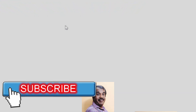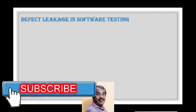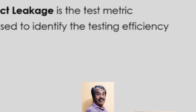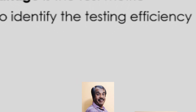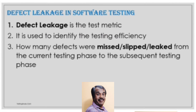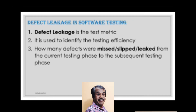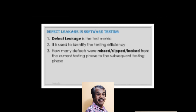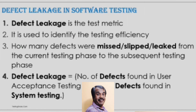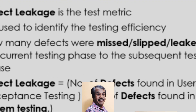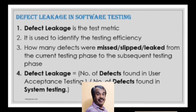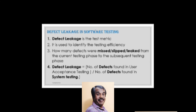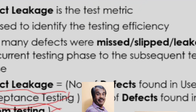Defect leakage is a test metric used to validate the efficiency of testing — specifically, how many defects were missed or slipped from the current testing phase to the subsequent phase. The formula is: Defect Leakage = Number of defects found in UAT ÷ Number of defects found in System Testing.